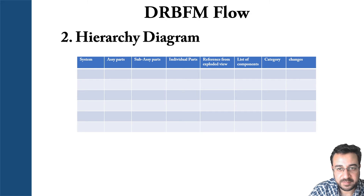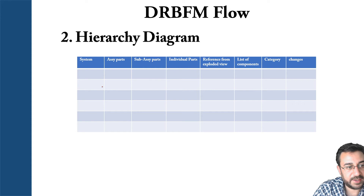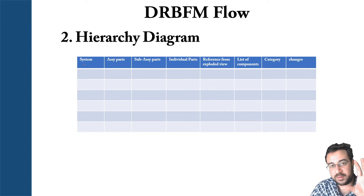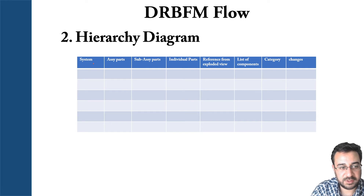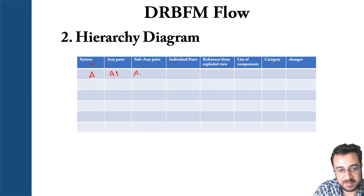Second, you create the hierarchy diagram. After finishing your visualization and breaking down all the components and sub-components, assigning numbers and tags as discussed, you create your hierarchy diagram. This is a top-down process: starting with the big assembly or system, then going to subsystems, parts, and sub-components. For example, system A has assembly parts A1, and A1 has A1-2 as a sub-assembly, and so on, down to individual specific parts with names and references from the exploded view.